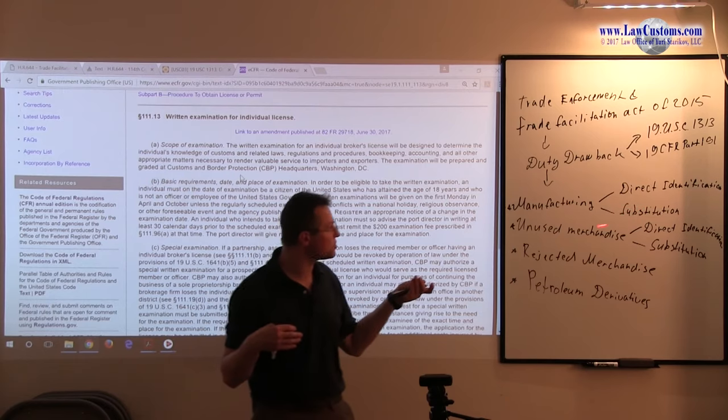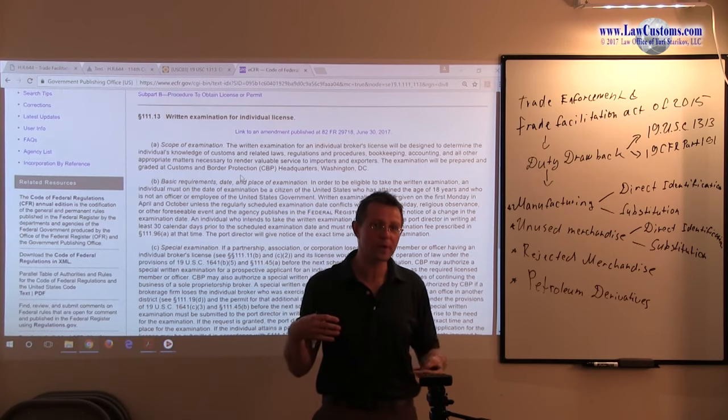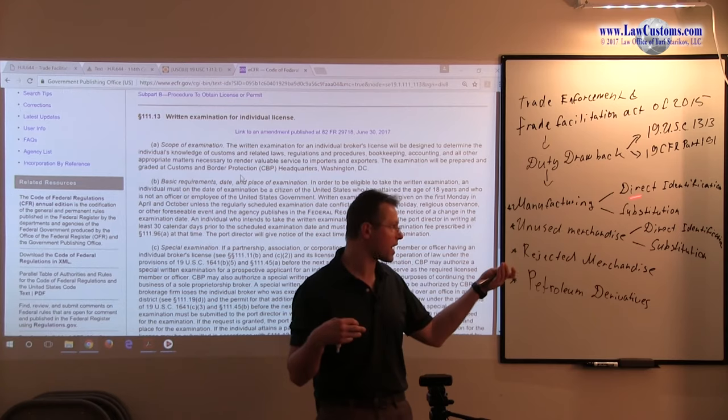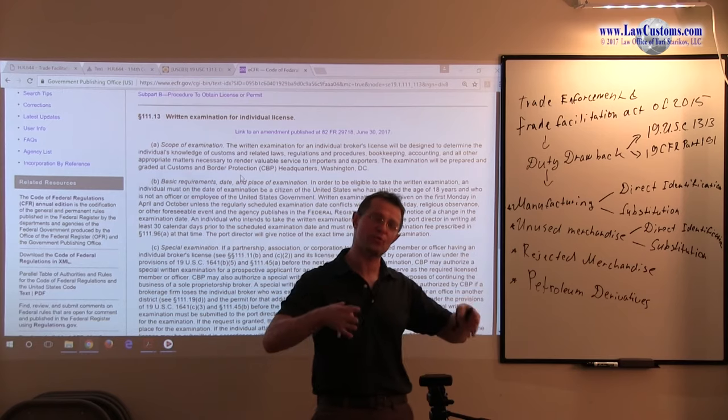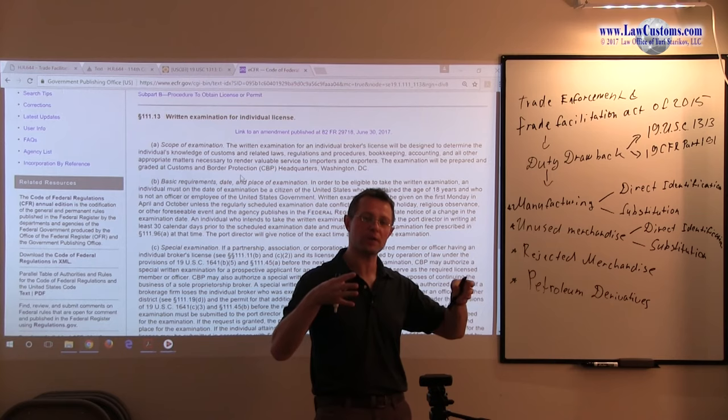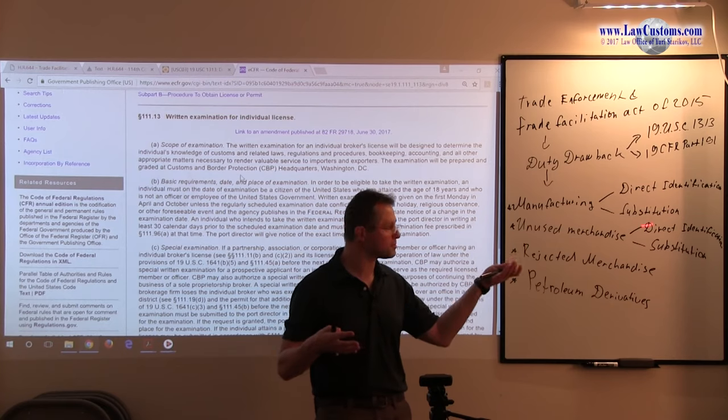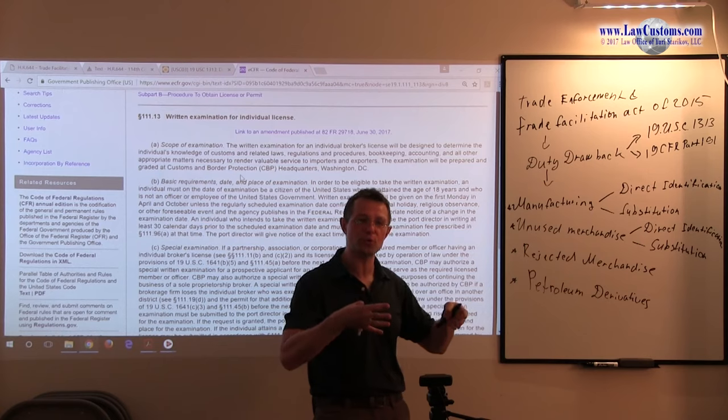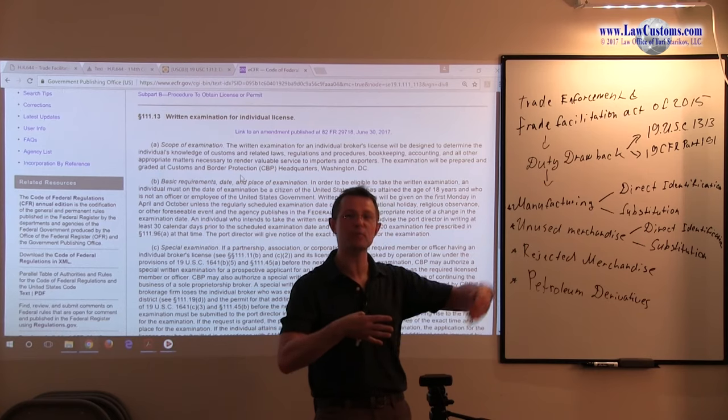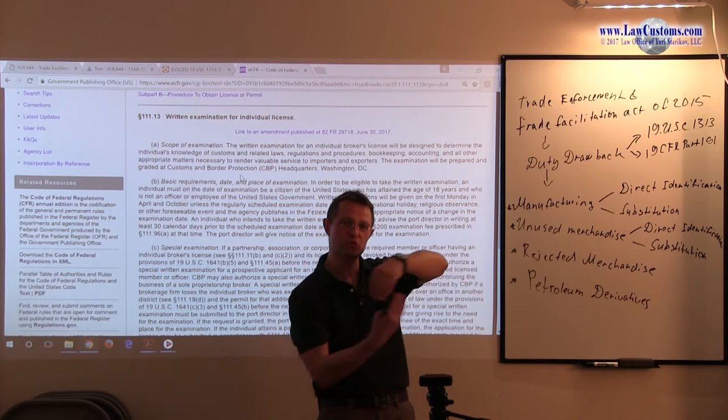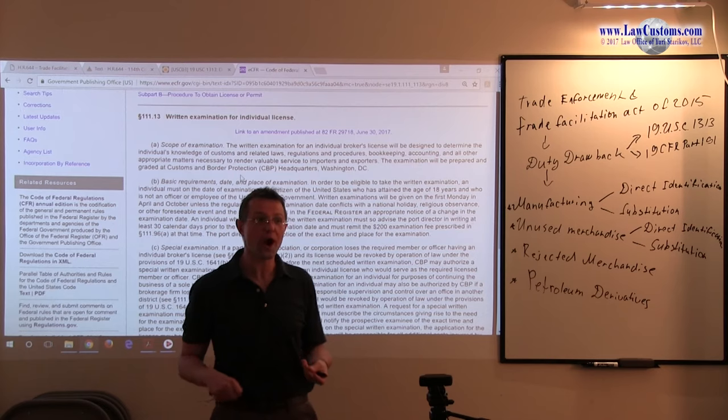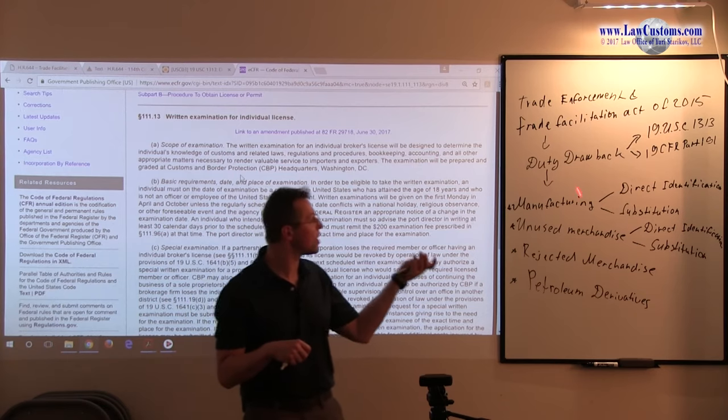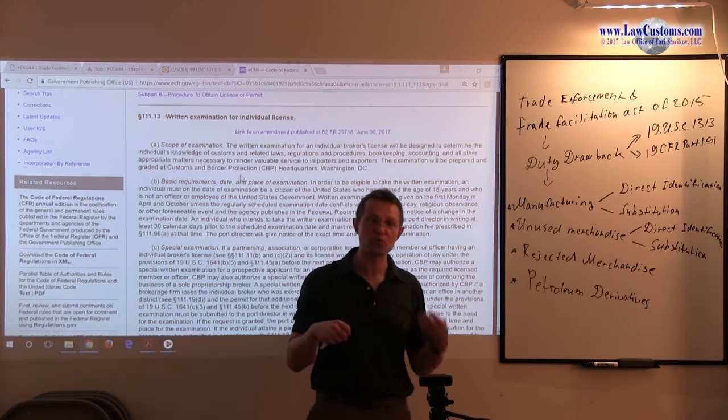And under the substitution manufacturing drawback, the answer is yes. You substituted, you still pay duty on those parts. You still pay duty on those Chinese parts that were manufactured, that arrived from China. But you substituted them with domestic parts because your order could no longer wait. And you went ahead and exported it out. So, the substitution took place. And because the substitution took place, you are entitled for what's called substitution manufacturing drawback.